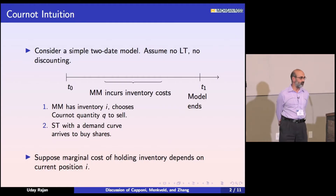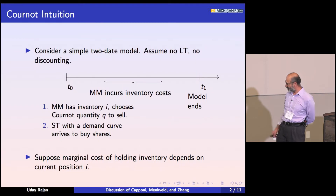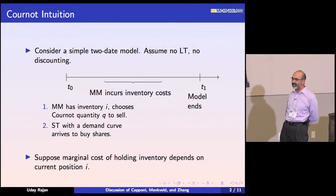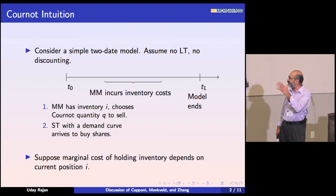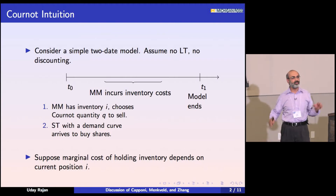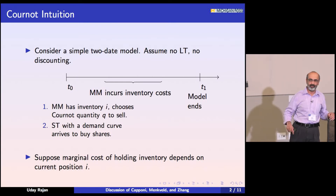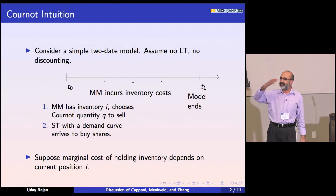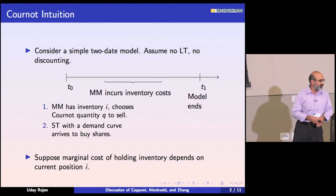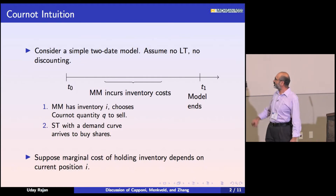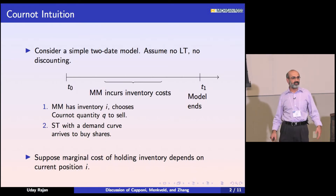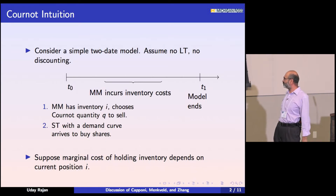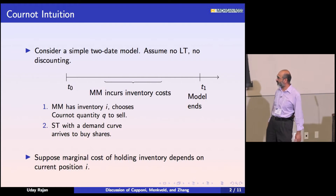Let's start with a simple two-date model. You have time zero. At time zero, a market maker has an inventory position. Let's assume there's only one of them — or maybe there are many and they choose a quantity they want to sell. Assume for now there's no large trader. Some short-term trader shows up; in the paper the short-term traders have linear demand curves for the asset with private values. The market maker incurs some inventory cost and at date one, the model ends — it's effectively a single period model.